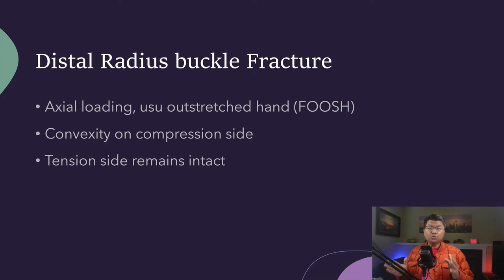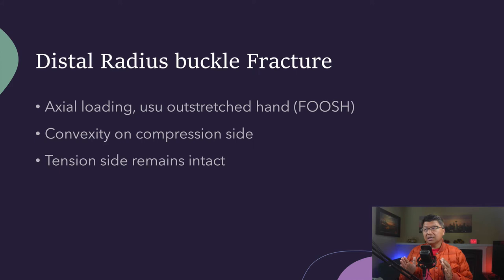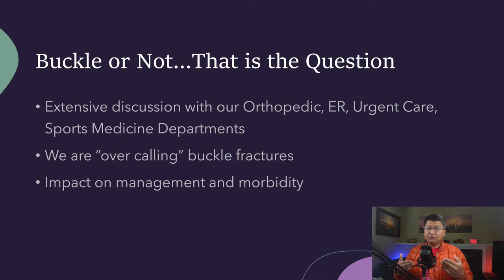A distal radial buccal fracture is basically the result of axial loading, usually on an outstretched hand — the so-called FOOSH injury, fall on an outstretched hand. There are two sides to consider: the compression side and the tension side. The fracture occurs on the compression side, forming the convexity, while the tension side is often left intact. After extensive discussion with our various services, we came to realize that we were over-calling buccal fractures by the clinical and surgical definition, and it did have a real impact on the management and morbidity of these patients.